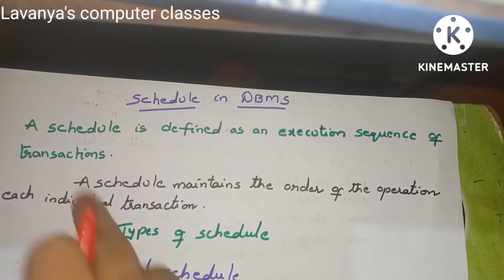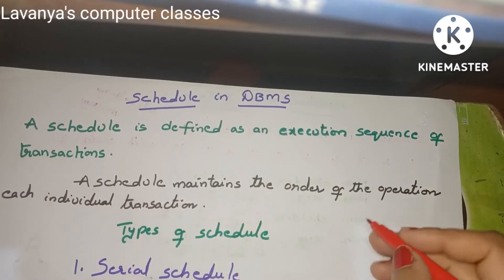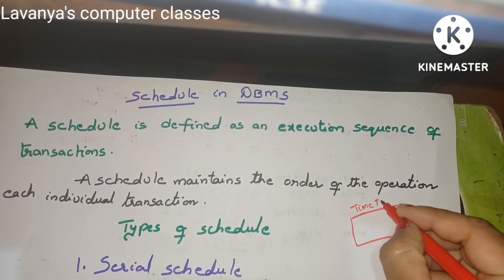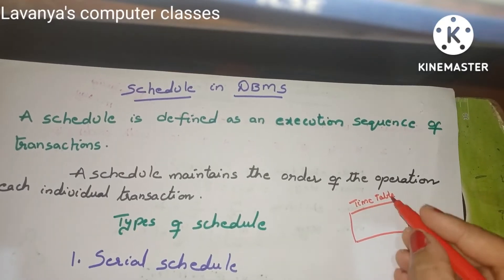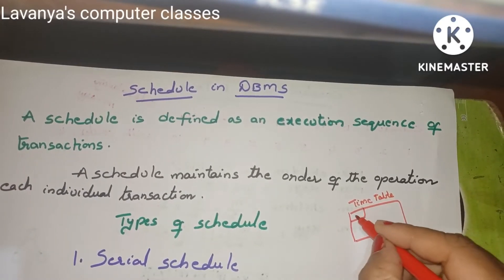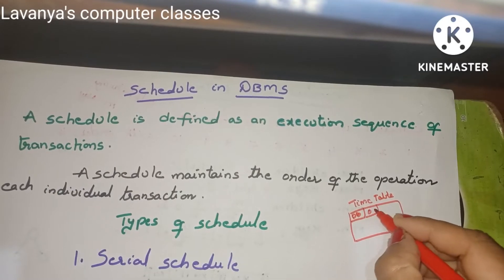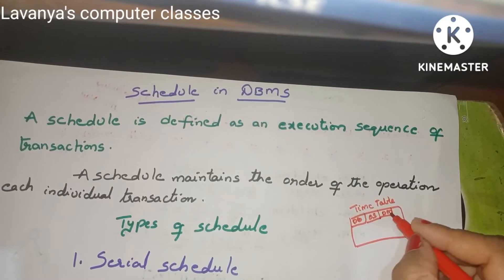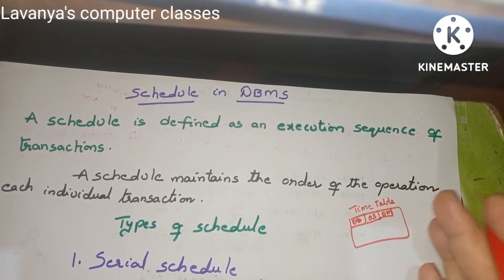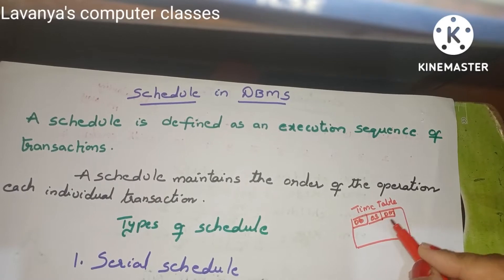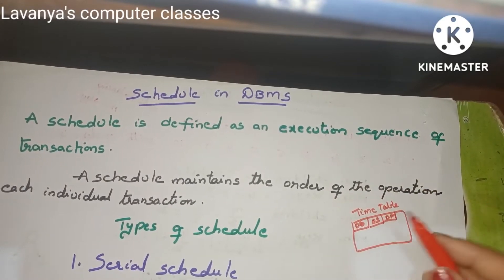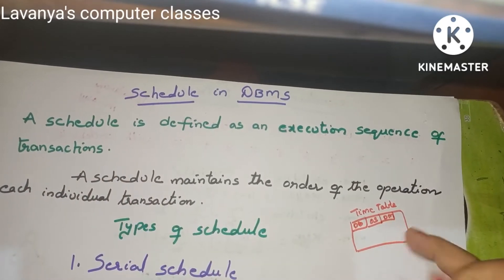We have to prepare it like a timetable. In college, there are many subjects, so we frame a timetable. The timetable tells us: first hour is DBMS, second hour is something else, third hour is DM. We are framing the timetable — meaning the execution of actions. There are actions, and we decide which one is executed first, which one is coming next. This is called a schedule, and according to this schedule we execute the college work.